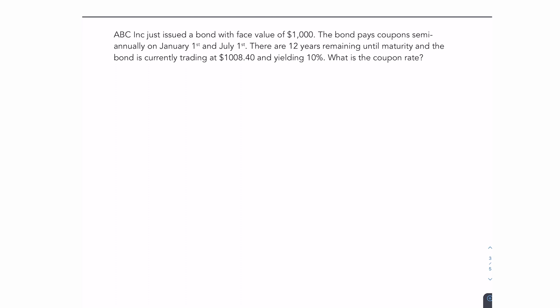So in order to solve this question, you need to first solve for the coupon payment. So this can be done using the formula. It can also be done using the financial calculator. So with the formula, we're going to set the price or the present value to $1,008.40. I'm going to set the payment or the coupon as the unknown and plug that into my bond price formula.